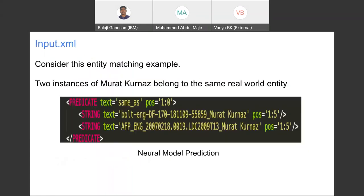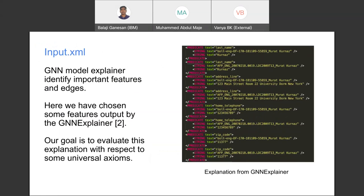So coming to an example used here, consider this entity matching example of the two instances of Murad Kurnas belonging to the same real world person. This is the neural model prediction. And consider the GNN model explainer, which gives us the important features and the edges required to predict that the two instances are the same. So we have chosen some important features from the explainer here and display. And our goal here is to evaluate whether the explanation with respect to the universal axiom, which we have, whether this explanation is correct or not.